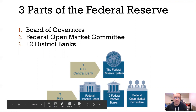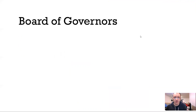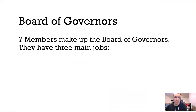You have a Board of Governors, a Federal Open Market Committee, and then you have 12 district banks. The highest part is the Board of Governors, and there are seven members who make up the Board of Governors.